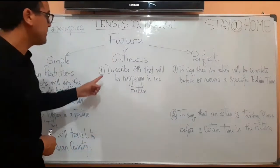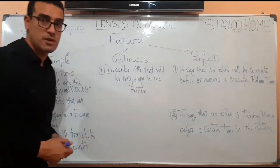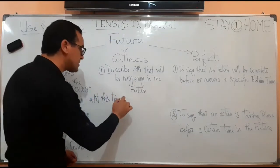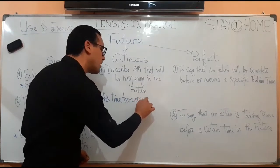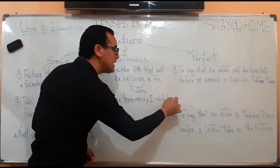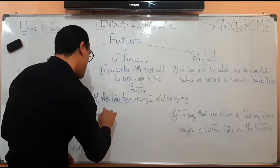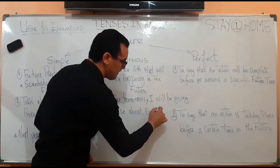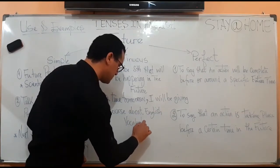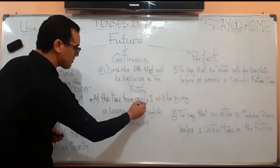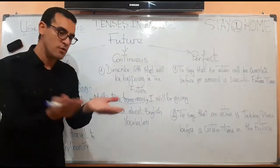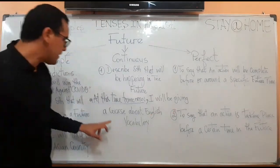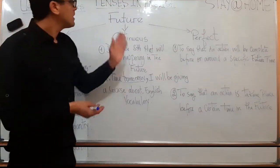Let's go to the future continuous. We use it to describe something that will be happening in the future at a specific time. For example: at this time tomorrow, I will be giving a course about English vocabulary. These adverbs of time are very important to denote which tense to use.